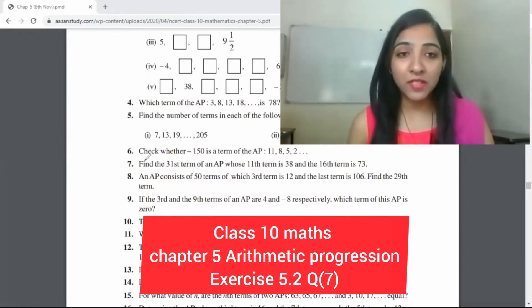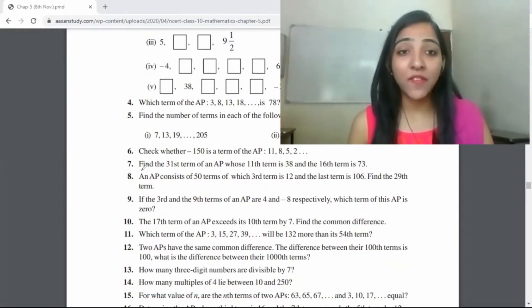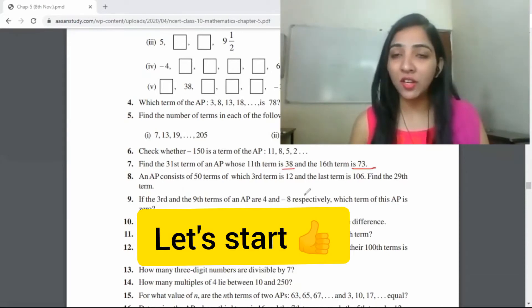Question number 7 is: find the 31st term of an AP whose 11th term is 38 and 16th term is 73. We will solve this. Let's start.